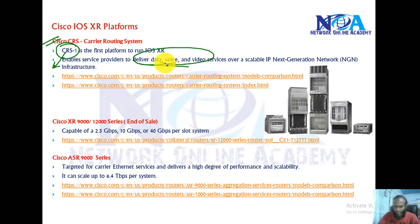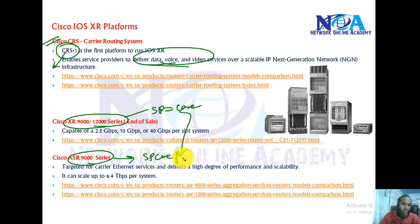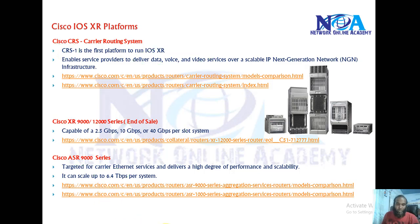The Cisco XR 12000 was introduced for service provider core networks, and these routers have been replaced by the Cisco ASR 9000 series, which are generally used inside service provider core networks. The ASR 9000 is also capable of providing high-speed carrier Ethernet services such as Metro Ethernet, and can scale up to 6.4 Tbps per system or per slot.